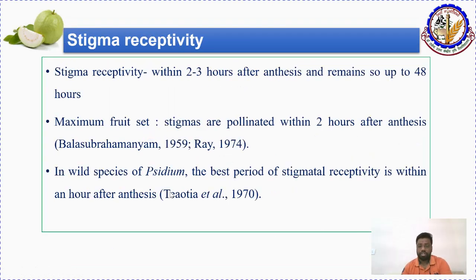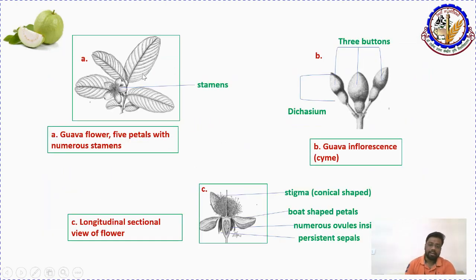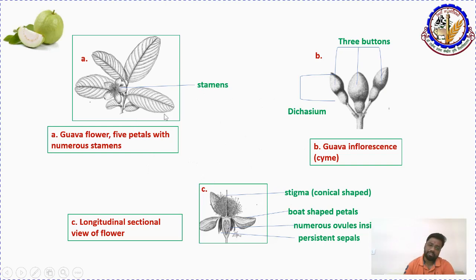Stigma receptivity occurs two to three hours after anthesis and remains up to 48 hours. So if we properly emasculate the flower, we can do pollination up to two days. The guava flower has five petals and numerous stamens. The calyx is visible at the bud stage; the stigma is conical shaped. This image provides a clear illustration of the guava flower structure.